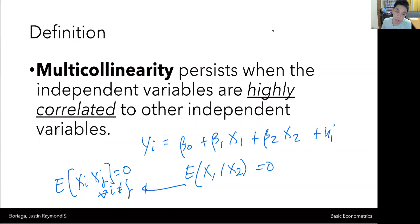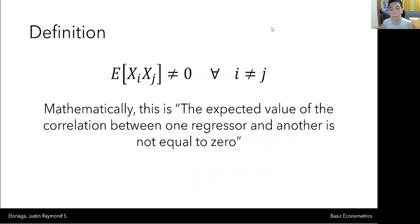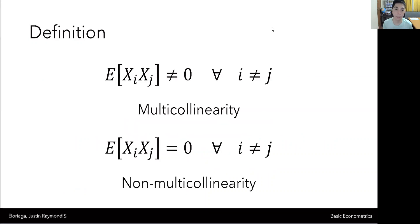So what happens when we cannot satisfy that assumption? What happens is there exists a degree of multicollinearity. So that's what multicollinearity is about. Mathematically, this is the expected value of the correlation between one regressor and another is not equal to zero. Two independent variables have some degree of correlation with one another or have some degree of relationship with one another.